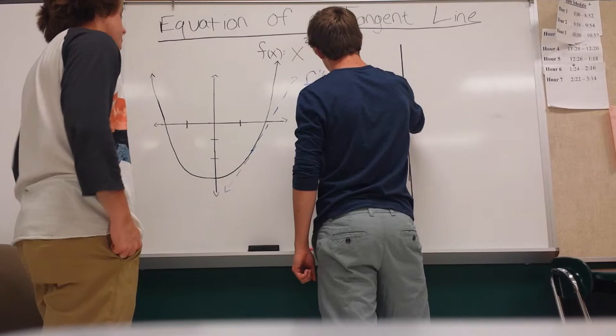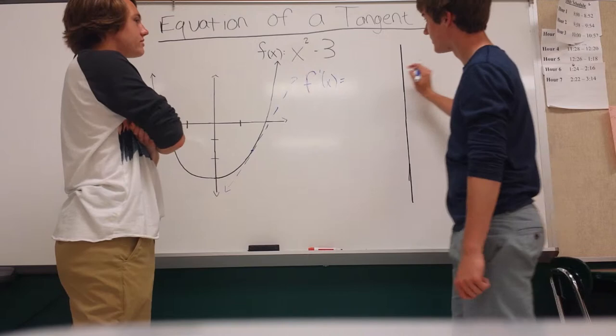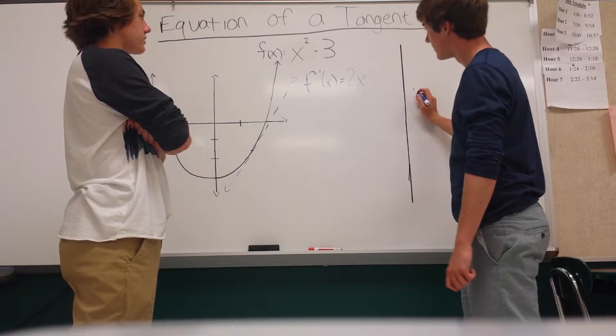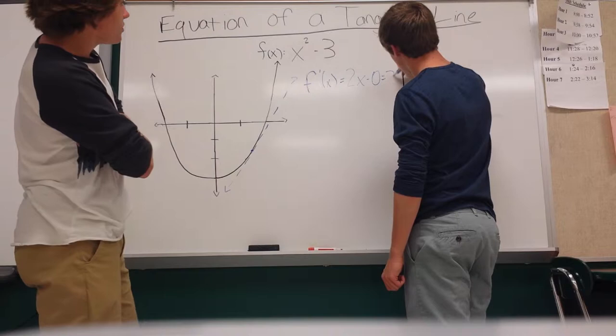So to take the derivative, you use the power rule. So you bring the 2 from the x squared into the front. And when you derive a constant like negative 3, you get 0. So the derivative is 2x.